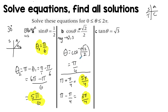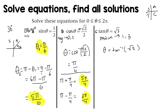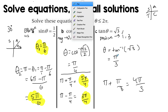Determining the sign and quadrant is important; then it's easier to find the acute angle and the associated angles. For tan θ = √3, this is positive, which means I need solutions in the first and third quadrant. Using the exact values table — dividing sine by cosine to get tangent — tan⁻¹(√3) = π/3, which is 60 degrees. That's the first quadrant. The third quadrant gives π + π/3 = 4π/3. So the two solutions are π/3 and 4π/3.